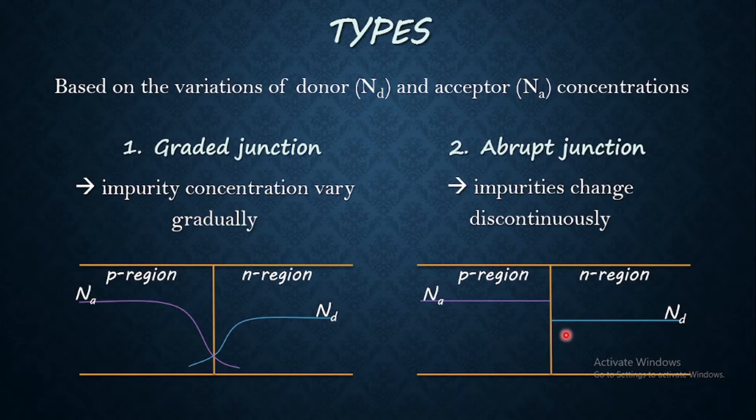That is in P region, the acceptor concentration is constant. And at the junction, N_A, that is the acceptor concentration drops to 0. And no acceptors are present in the N region.